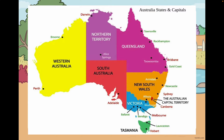To give you some background information about Australia, it contains seven states. Each state, as you can see on the image, has its own capital, highlighted in red — such as Melbourne, for example.